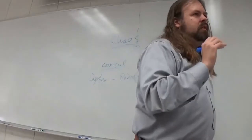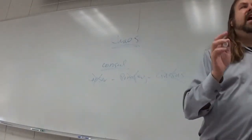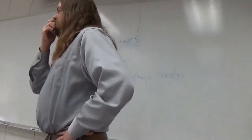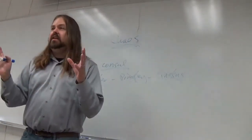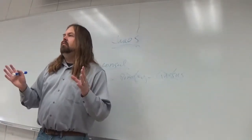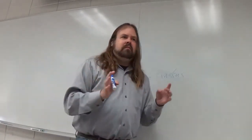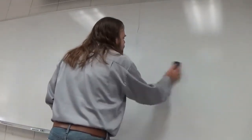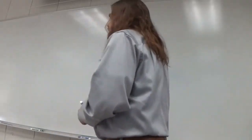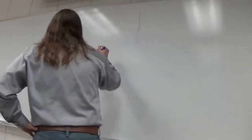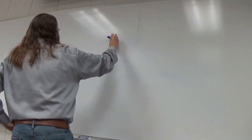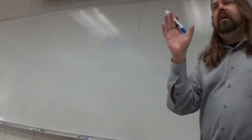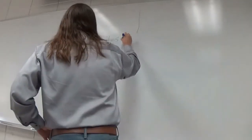So Augustus promotes a set of values that he claims are traditional Roman values, but would in fact add up to a kind of invented tradition. This wasn't really the way Romans were living prior to the Augustan age. So one idea that he adopts from the Greeks is the idea of the oikos, right? The single-family household as building block of the nation, but he calls it, of course, by its Latin name, domus.